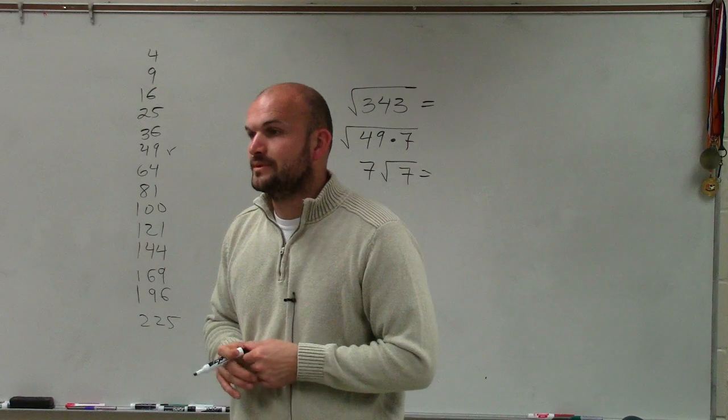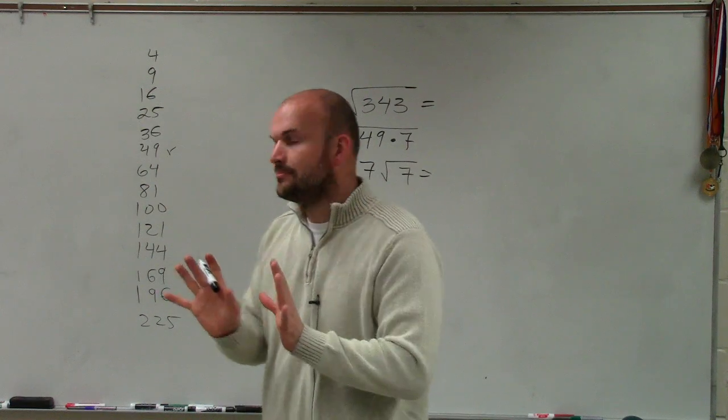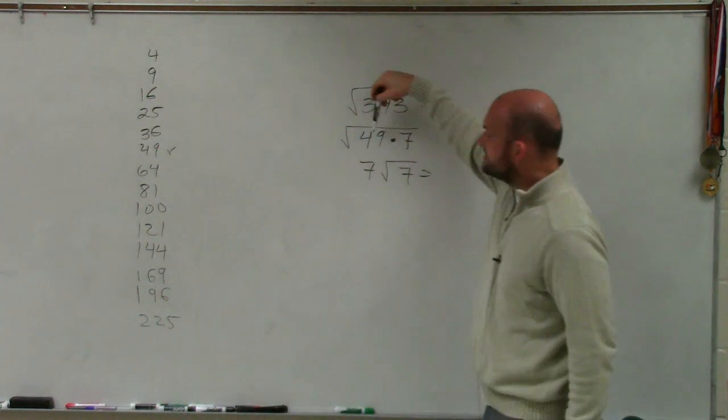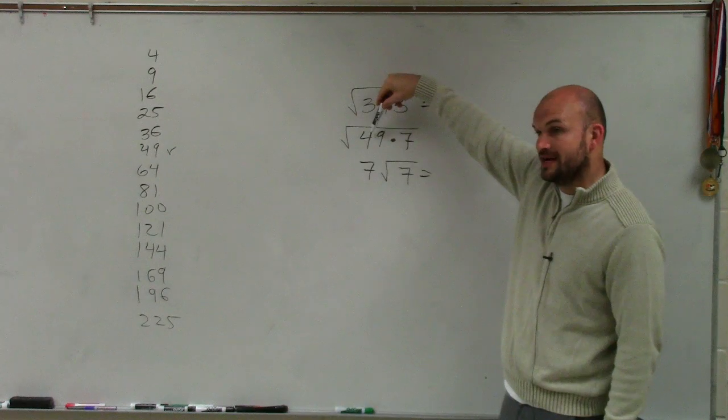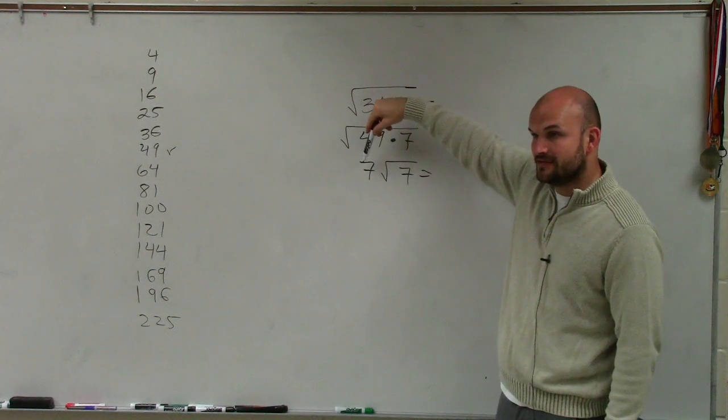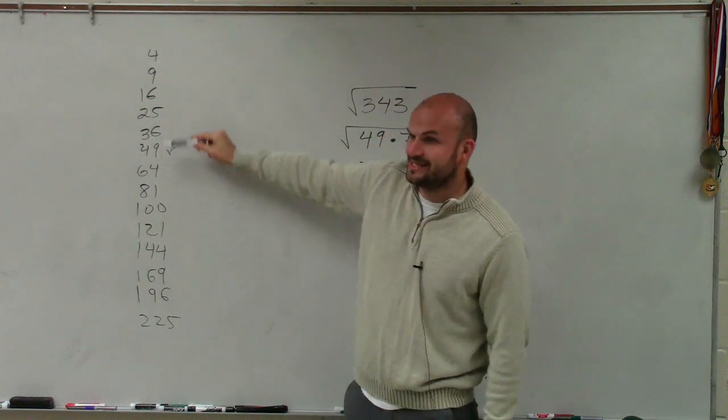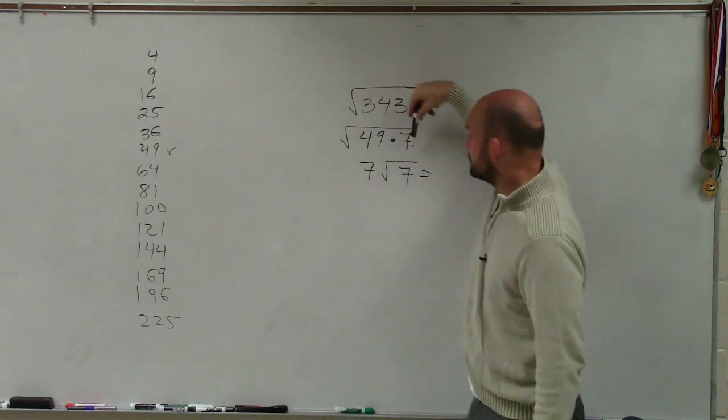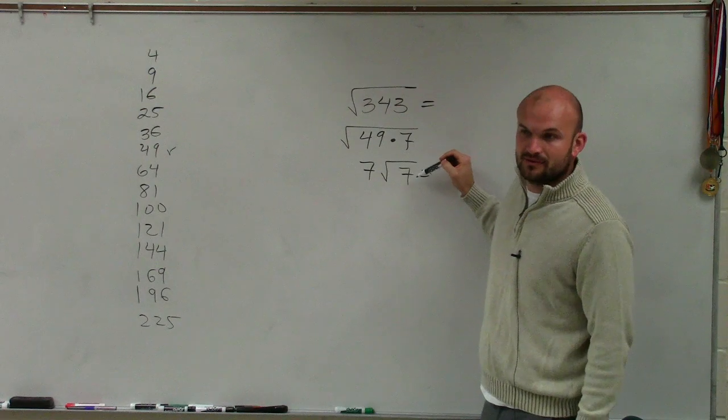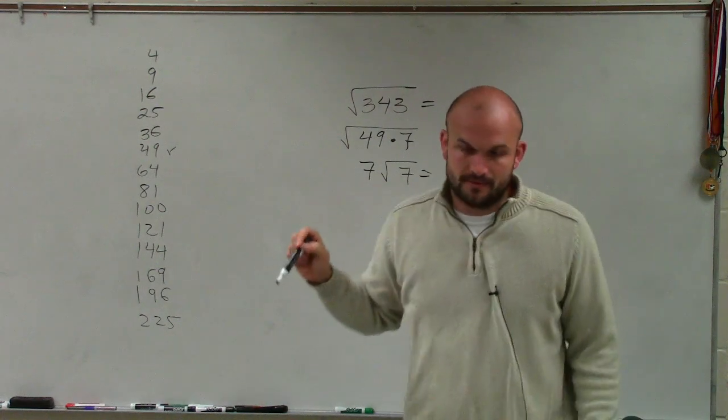Student: How do you know which number to put on the outside and which one to put on the inside? I'm not putting the number on the outside. I'm taking the square root of 49. The square root of 49 is 7. I can't take the square root of 7. The square root of 7 is not up here, so I can't take the square root to get an even integer, so therefore it stays under the radical. Does that make sense?